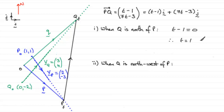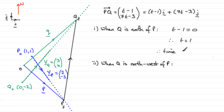So we can say that therefore t minus 1 must equal 0, and that means t equals 1 — 1 hour. Now remember these ships started at 2 p.m., and therefore 1 hour after 2 p.m. means the time is 3 p.m.